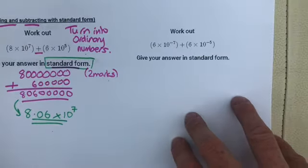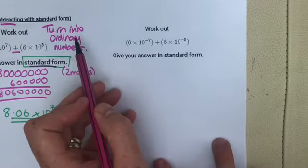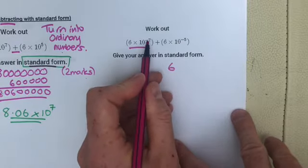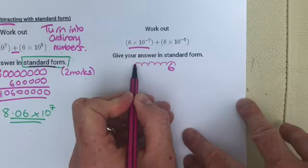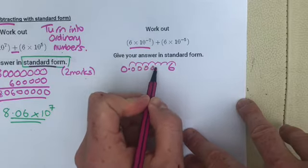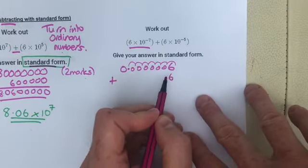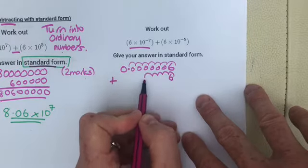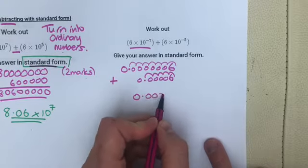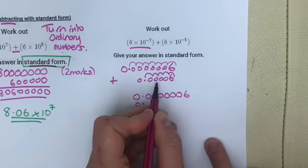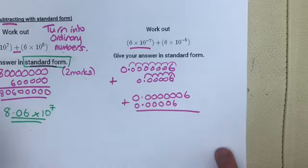Second one: this time there are minuses to deal with. When you're writing the numbers down you've got to go the opposite way. So 10 to the minus 7 as a power means the decimal point goes there and you get zeros at the front: 0.00000016. Then I'm adding 6 times 10 to the minus 5, so the decimal point goes there with four zeros before the 6. Notice the decimal points aren't lined up, so I'm going to write them out lined up.